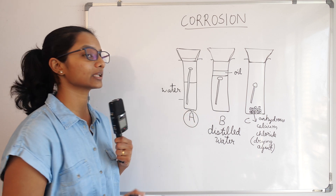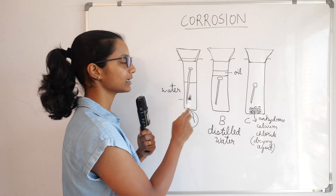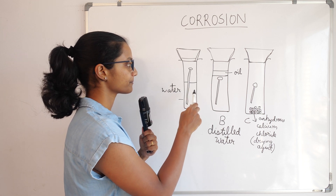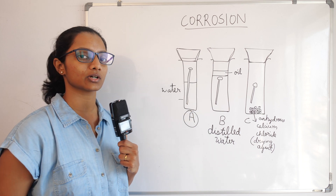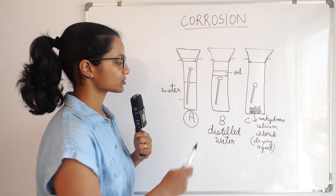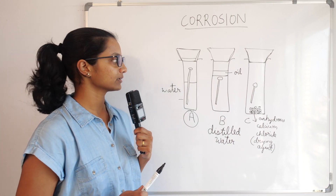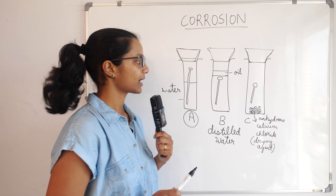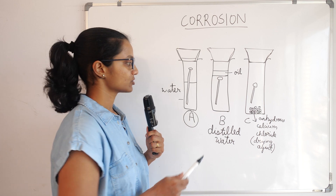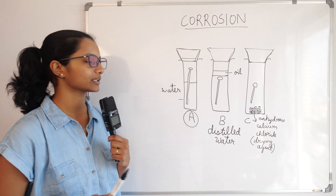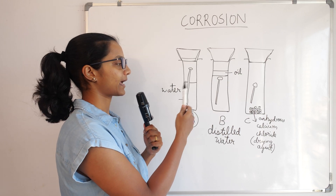The iron nail in test tube A gets rusted because it is in contact with both water and air — air is present above the water and also dissolved in the water. In test tube B, the nail is in contact with only water and no air. In test tube C, the nail is in contact with only air. So it can be clearly understood that for iron to get rusted, it needs both water and air.